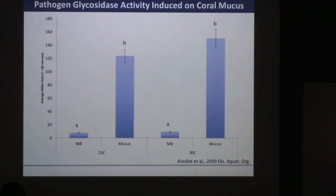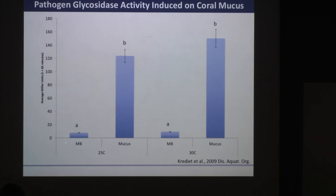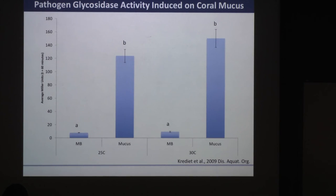I took an enzymatic approach first, looking at the metabolic activity of our opportunistic pathogen Serratia marcescens and its ability to utilize some of the glycosides in this mucus through enzymatic activity. Growing the bacteria either on marine broth or in coral mucus at 25 or 30 degrees, we see huge amounts of glycosidase activity in this pathogen grown on coral mucus. This was our first indication that yes, this pathogen is actually utilizing components of the coral mucus, probably more efficiently than some of the bacteria natively associated with the coral.